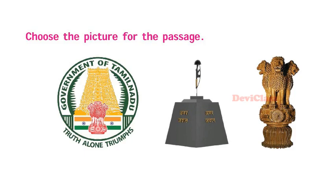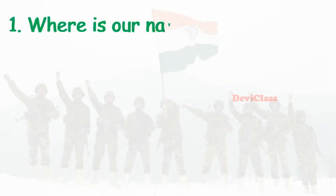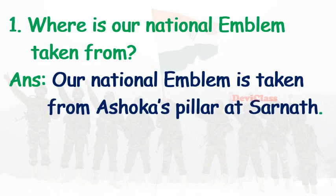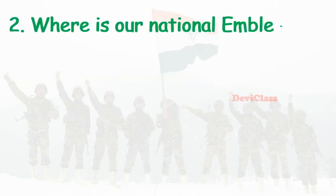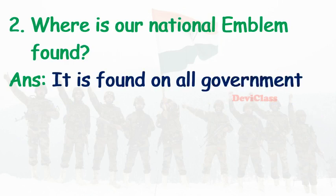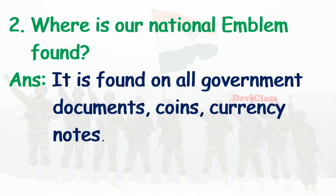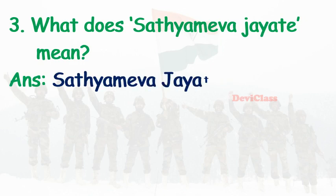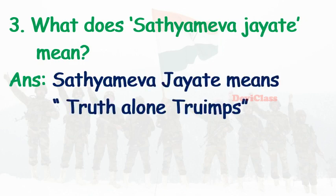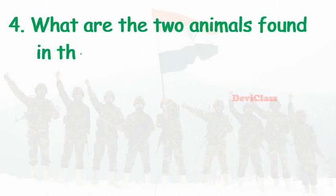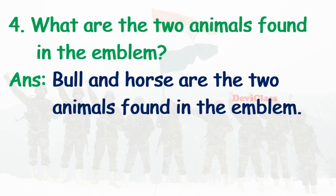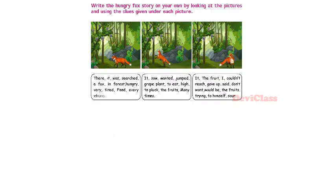These words mean 'Truth alone triumphs.' Choose the picture for the passage — the second picture is the correct answer. Answer the following: where is the national emblem taken from? Our national emblem is taken from Ashoka's pillar at Sarnath. Where is our national emblem found? It is found on all government documents, coins, currency notes, postcards, envelopes, etc. What does Satyameva Jayate mean? It means truth alone triumphs. What are the two animals found in the emblem? Bull and horse are the two animals found in the emblem.